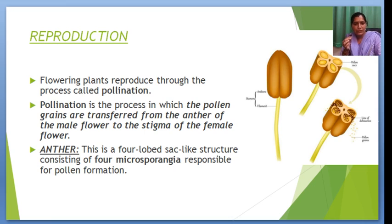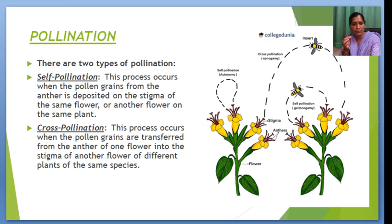Next is reproduction. Flowering plants reproduce through the process called pollination. What is pollination? Pollination is the process in which the pollen grains are transferred from the anther of the male plant to the stigma of the female plant. The anther is a four-lobed, sac-type structure consisting of four microsporangia, responsible for pollen production.